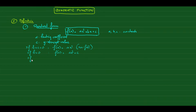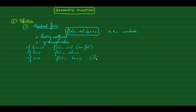However, if a equals zero, then the function becomes bx + c. This is no longer quadratic, because the highest degree is now the first degree, not the second. So it becomes a linear function — it's not quadratic. The a value is very important.